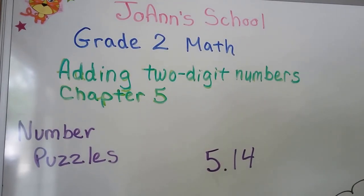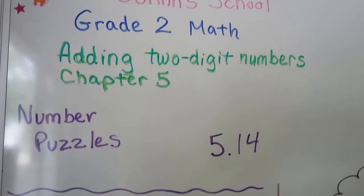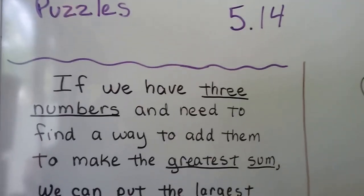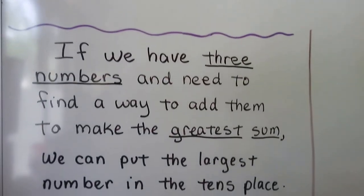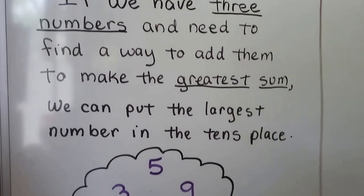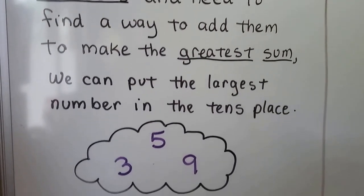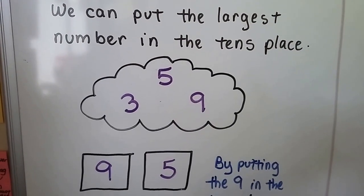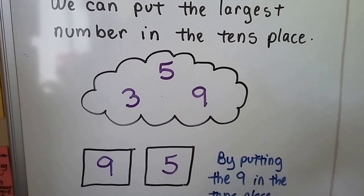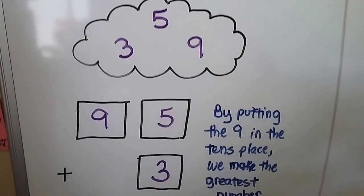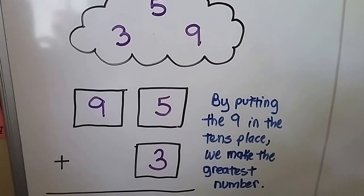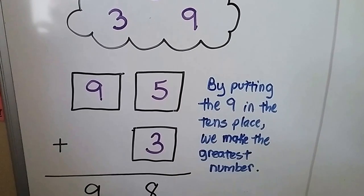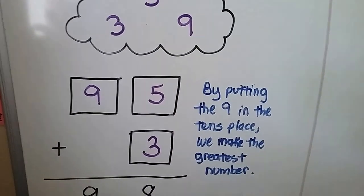Number puzzles, lesson 5.14. When we have three numbers and we need to find a way to add them to make the greatest sum, we can put the largest number in the tens place. We have a five, a three, and a nine. If we put the nine into the tens place, it's going to help us make the largest number.